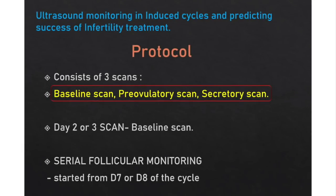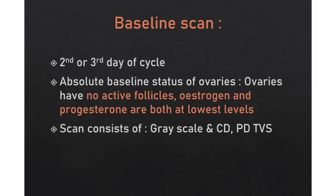Evaluation of the complete cycle instead of only a pre-HCG scan is essential and consists of 3 scans: baseline scan, pre-ovulatory scan, and secretory scan. The baseline scan is done on day 2 or 3 of the menstrual cycle, whereas serial follicular monitoring is started from day 7 or 8 of the cycle.